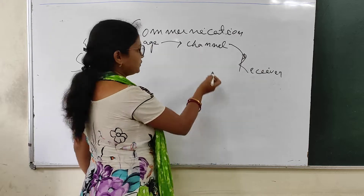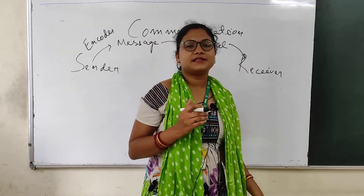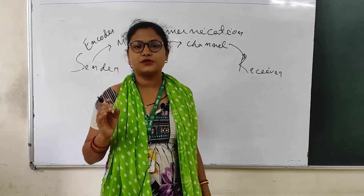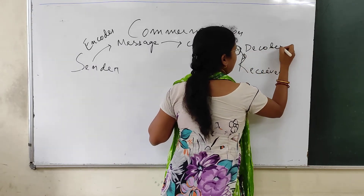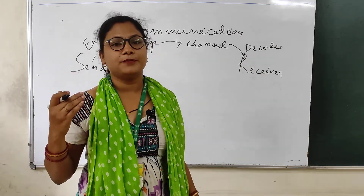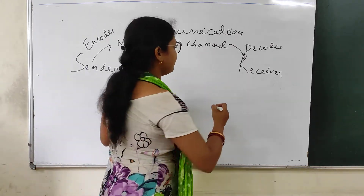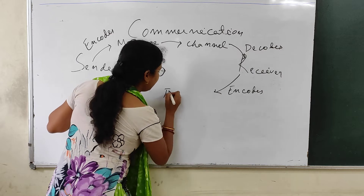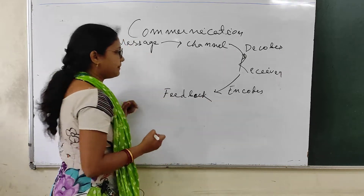The message comes from the sender to the receiver through a channel. To receive and understand the message properly, the receiver needs to decode the message. Decoding is the process of understanding the message inside the receiver's mind. Then the receiver encodes a message to send back as feedback.